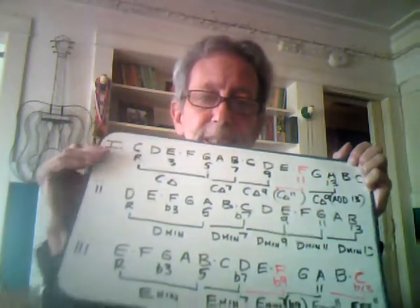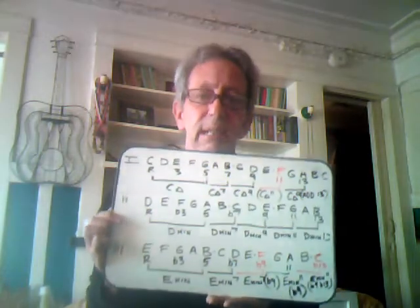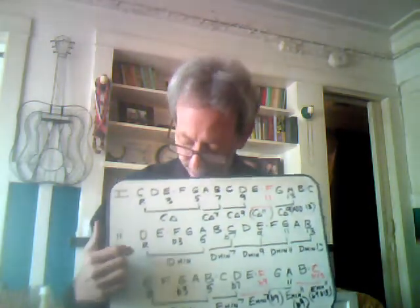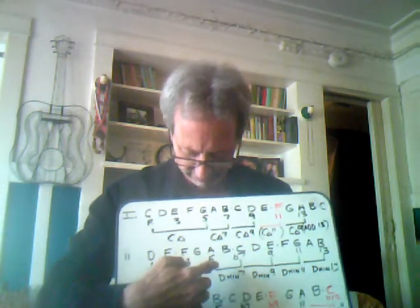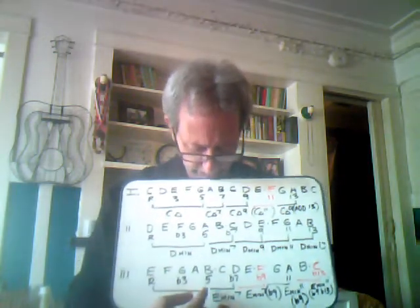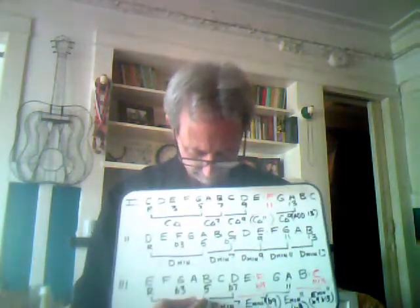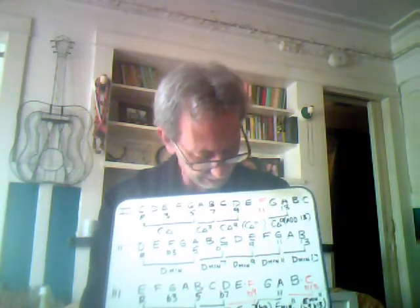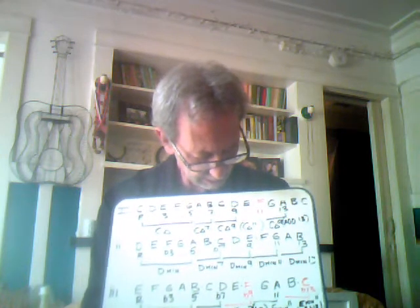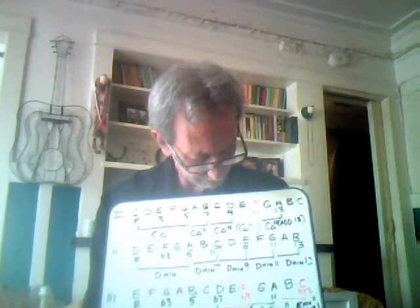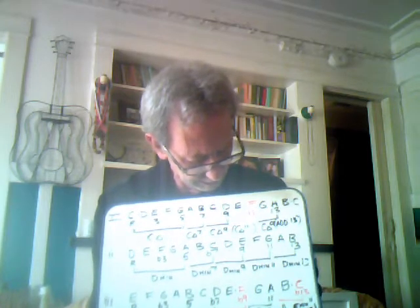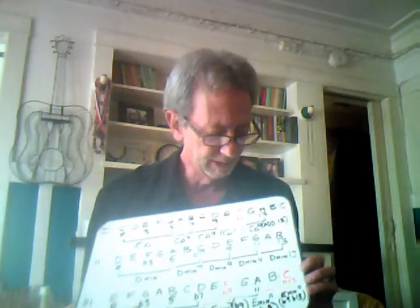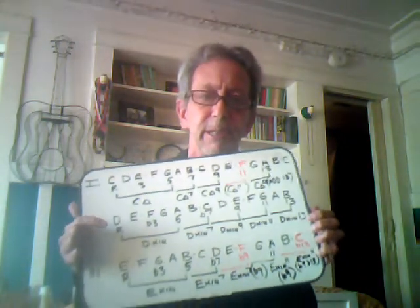Now if we move up to the third chord of the key of C, we get E minor — and this has double the problem. This is the only chord that has the problem twice. So we have E, G, the flat seven. Then we get a minor ninth here, and we get the E minor eleven here. And finally the flat thirteen over here, which creates another minor ninth.